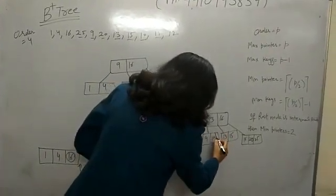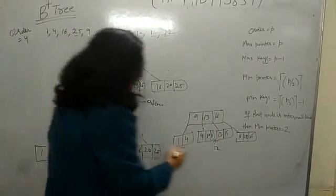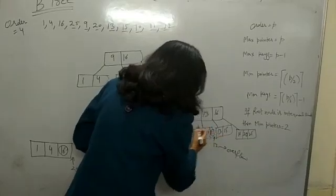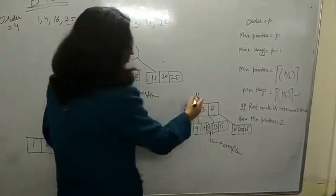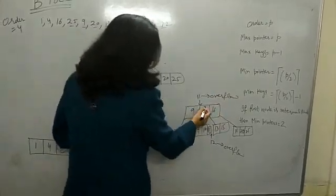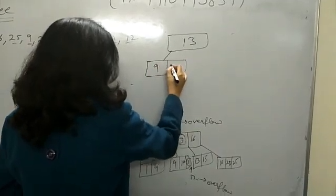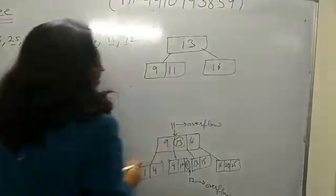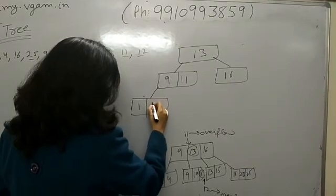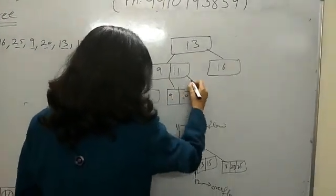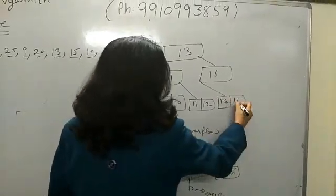Next, 11 comes in, then 12 — but overflow condition occurs again. I pick the 3rd element as middle and it goes up. However, it needs to go to the parent node, where another overflow is generated. So the middle element — the 3rd — goes up again, giving us 9 and 11 at the upper level. Notice that 13 is not copied here because this is not a leaf node — we only copy when it is a leaf node. But 13 is already present in the leaf node, so there is no problem.